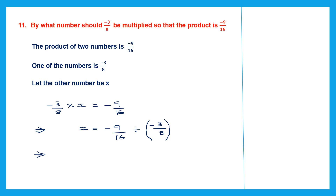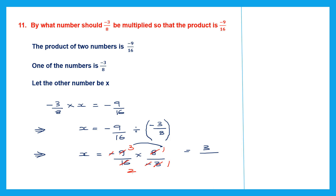Let's find the value of x by simplifying. Minus 9 by 16 — division changes to multiplication — minus 3 by 8 we write as 8 by minus 3, the reciprocal. We can cancel the two minus signs. Then we can cancel 3 and 9: 3 ones are 3 and 3 threes are 9. We can also cancel 8 and 16 both by 8: 8 ones are 8 and 8 twos are 16.